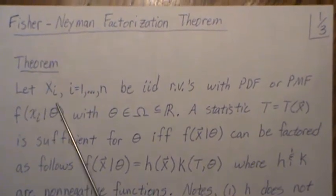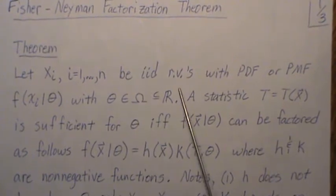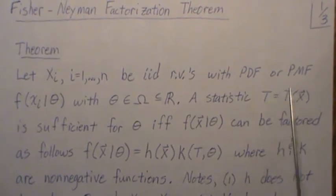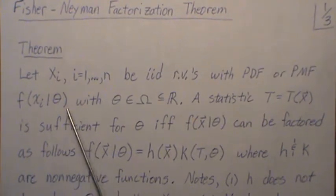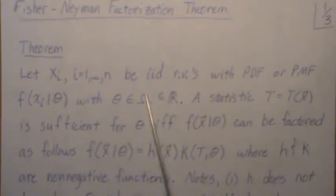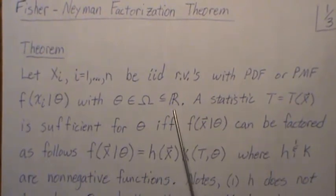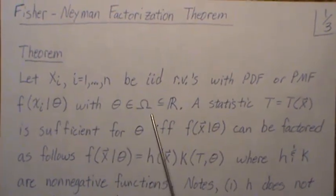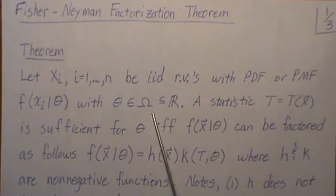So let x_i, i from 1 to n, be iid random variables with PDF or PMF f of x_i given theta, with theta in the parameter space omega, which is a real number. In this theorem, we're looking at real-valued parameters. An equivalent theorem and proof can be done for vector-valued functions.